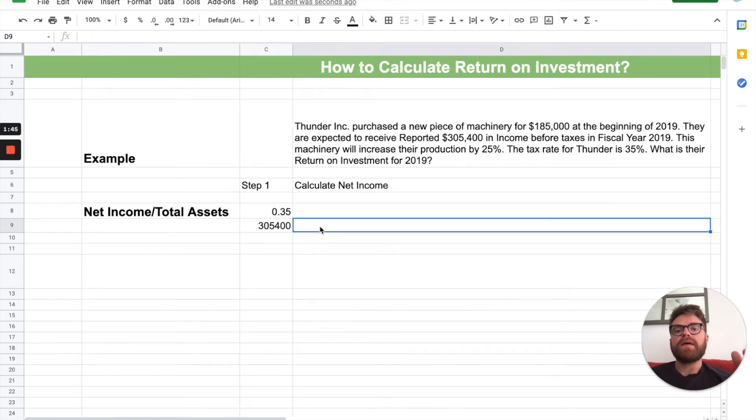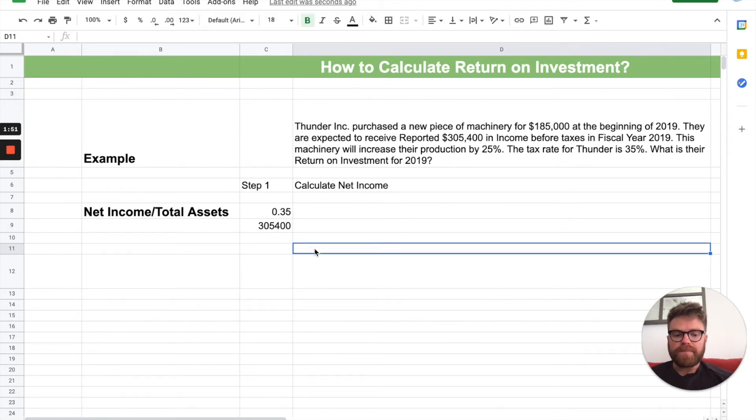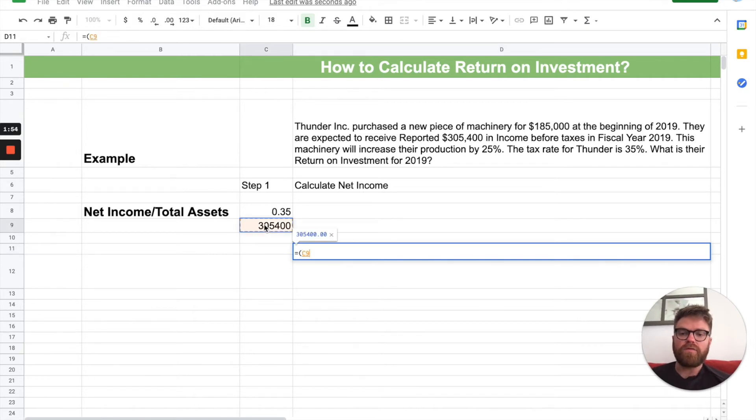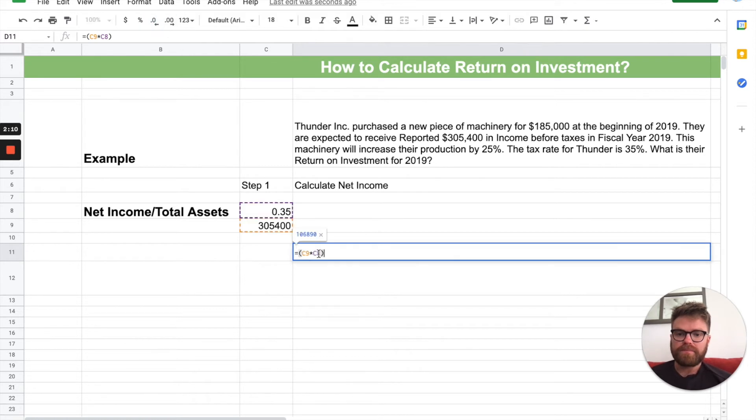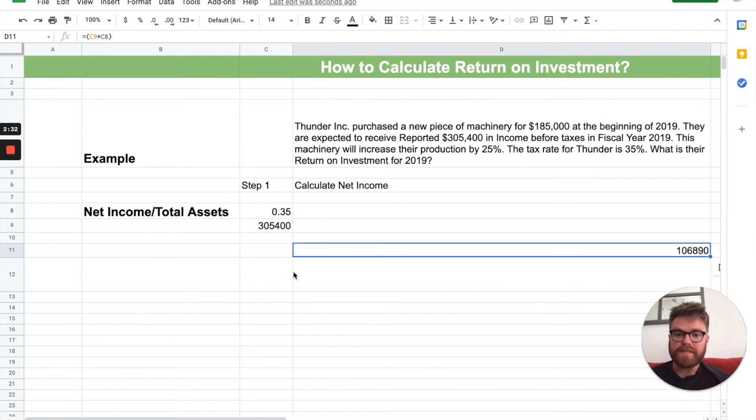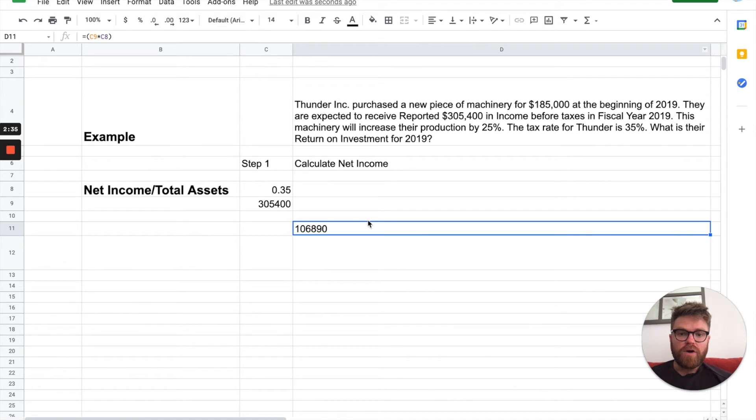So, how do we get income after taxes, or net income? Let me show you. So, one way to do it is you take, I'm going to do a formula. You take your income before taxes, and you multiply it times the tax rate. So, $305,400 times 35%. And you get this number here. So, it's $106,890. So, what that is, is that is your income tax. The amount of tax on your income. So, that's just how much your income tax was. That's it.